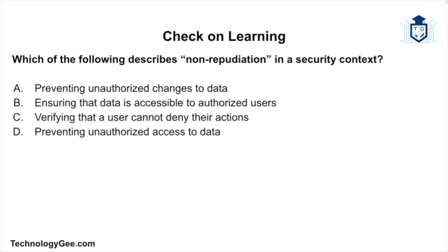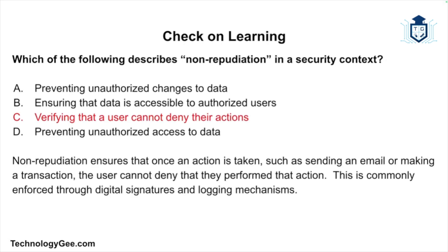Final question: Which of the following describes non-repudiation in a security context? Is it preventing unauthorized changes to data? Ensuring data is accessible to authorized users? Verifying that a user cannot deny their actions? Or preventing unauthorized access to data? The correct answer is verifying that a user cannot deny their actions. Non-repudiation ensures that once an action is taken — such as sending an email or making a transaction — the user cannot deny performing it. This is commonly enforced through digital signatures and logging mechanisms.